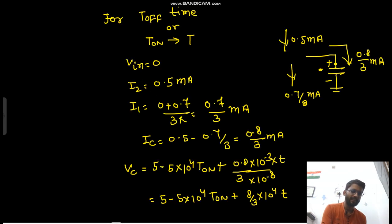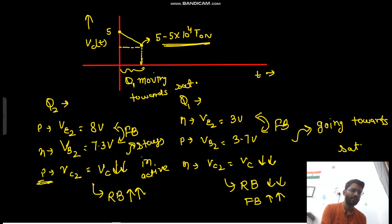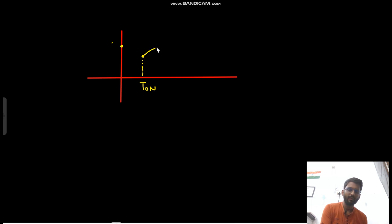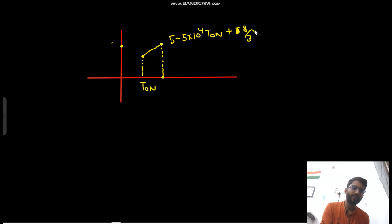So now you can draw VC(t) again. This was your initial value at 5V at T_on. Now the slope is less: here the slope is (8/3) × 10⁴, whereas before it was 5 × 10⁴. So the slope is less. The value at the end of T-off would be 5 − 5 × 10⁴ × T_on + (8/3) × 10⁴ × T_off.